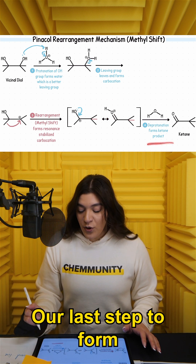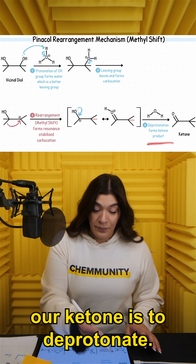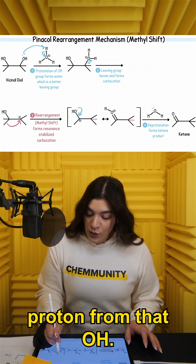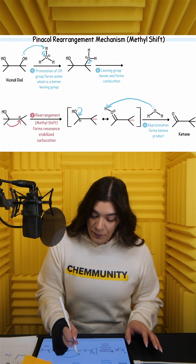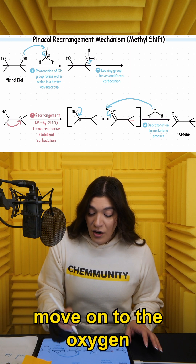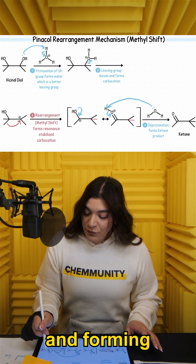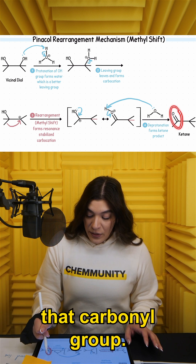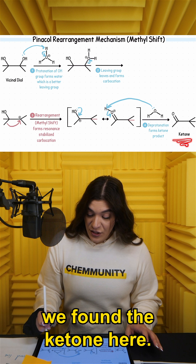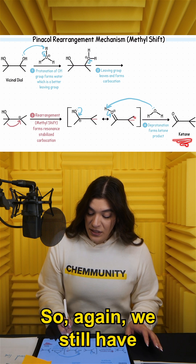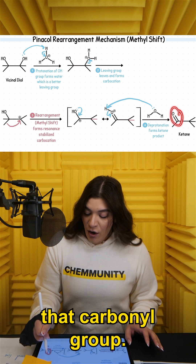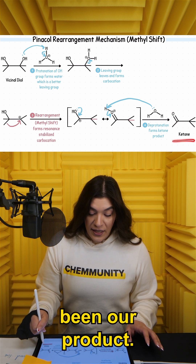Our last step to form our ketone is to deprotonate. So using water, we're going to remove a proton from that OH. These electrons now move on to the oxygen, making it neutral and forming that carbonyl group — and we see we've formed the ketone here. So again, we still have that methyl shift that we showed. This is now that carbonyl group, and this would have been our product.